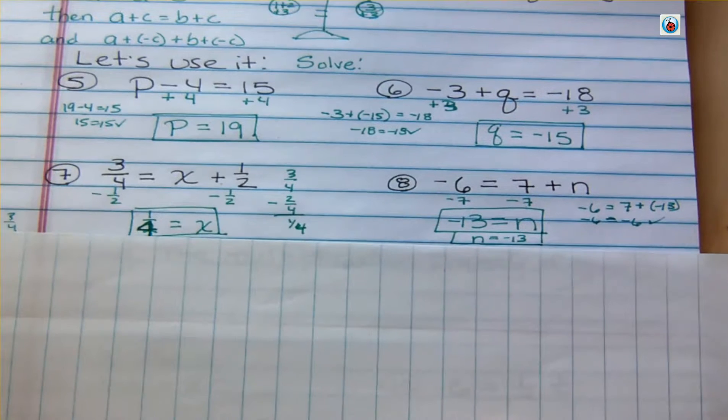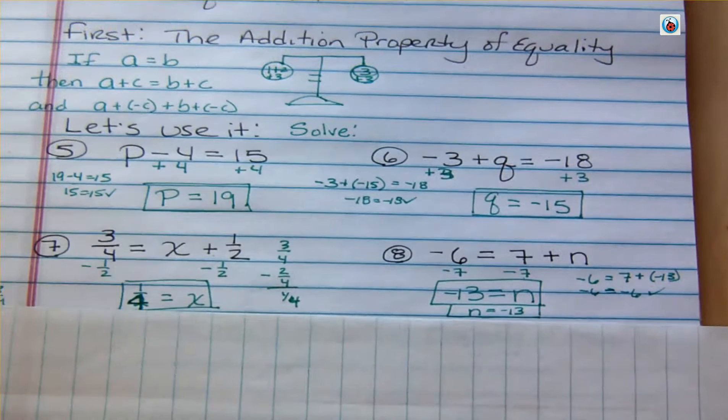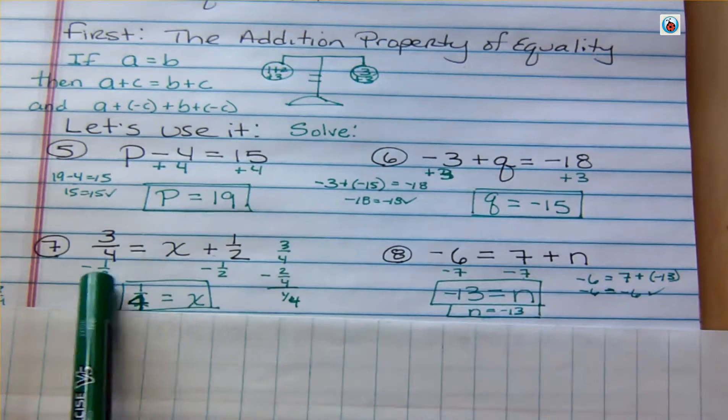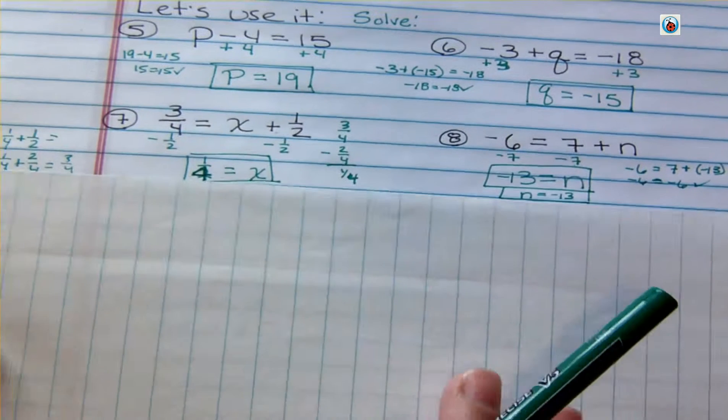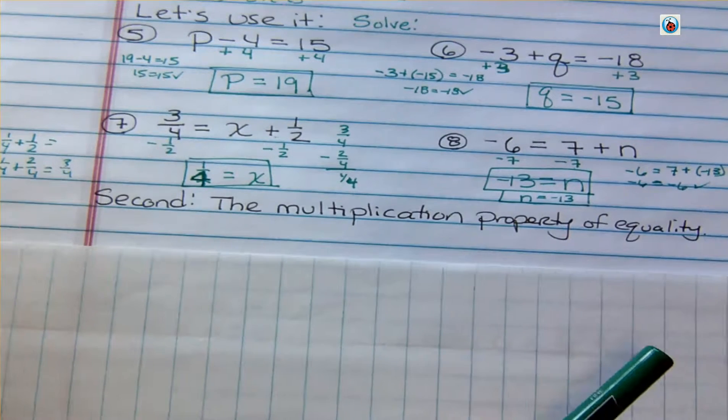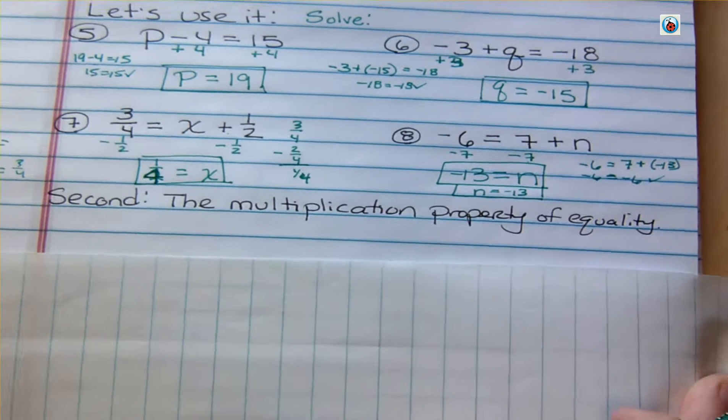Notice that every time I solved an equation, I did the same thing to both sides. That's keeping that in balance, that scale that we need. So now let's look at the second one, the second property, and that's the multiplication property of equality.